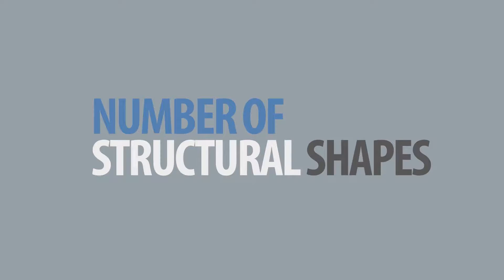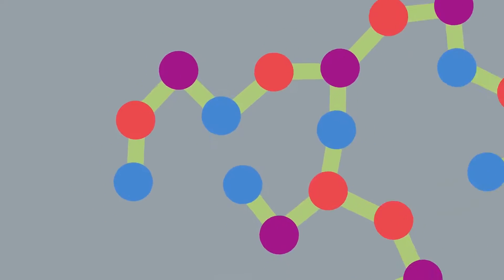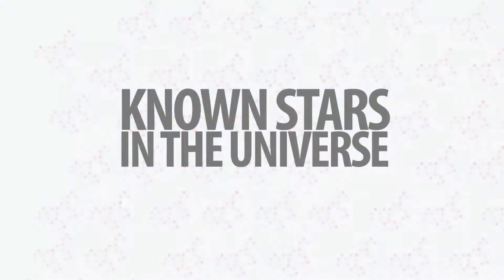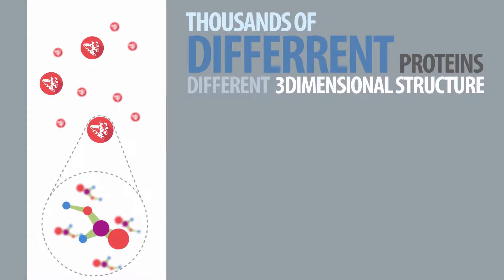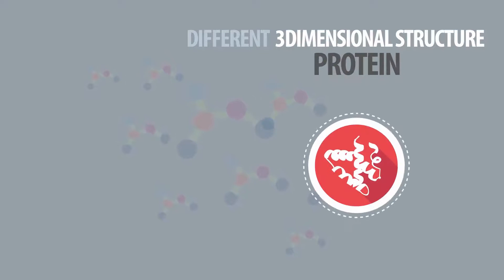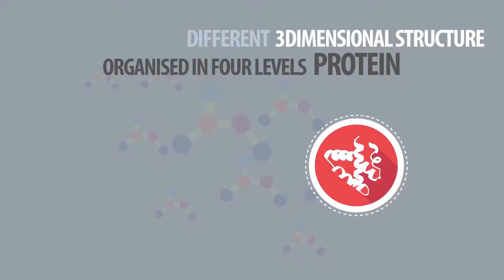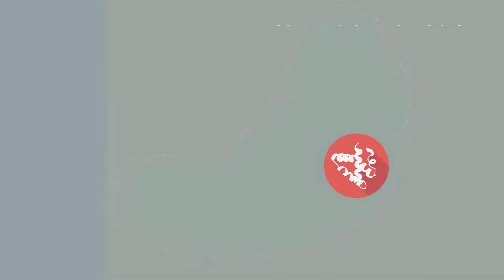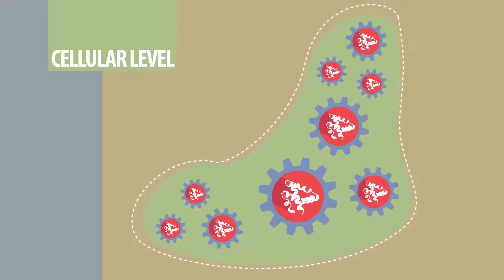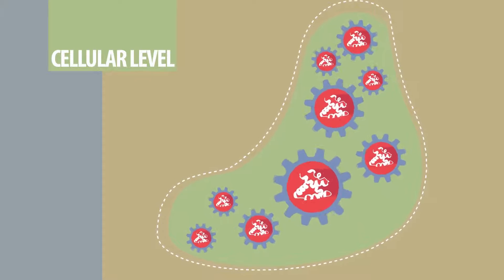The number of structural shapes that a protein can take is more than the number of known stars in our universe. Each of the thousands of different proteins in our bodies has a different three-dimensional structure or molecular shape. The three-dimensional structures that proteins are folded into can be organized into four levels: one, primary; two, secondary; three, tertiary; four, quaternary. At cellular level, the shape of the protein allows it to bind on specific active sites of the cell to perform a particular function.